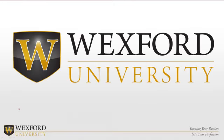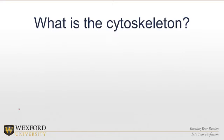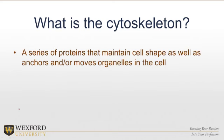In this lecture we're going to talk briefly about the cytoskeleton and also how cells are often interconnected with each other. So what is the cytoskeleton? It's a series of proteins that maintain cell shape as well as anchor and/or move organelles in the cell. Think of it like a scaffolding or like a skeleton within the cell to give it its shape, and it allows organelles and objects to move throughout it.